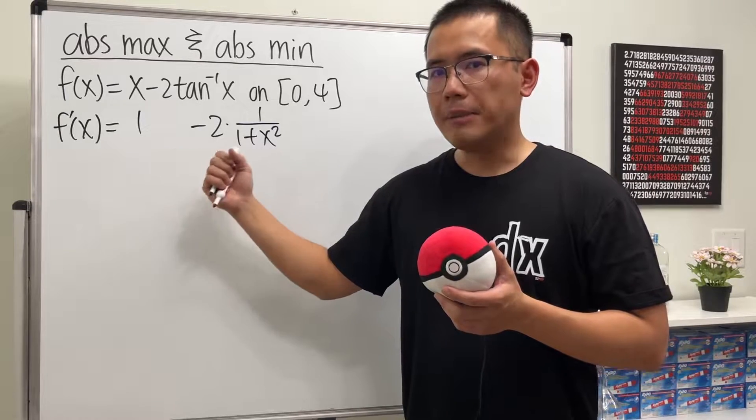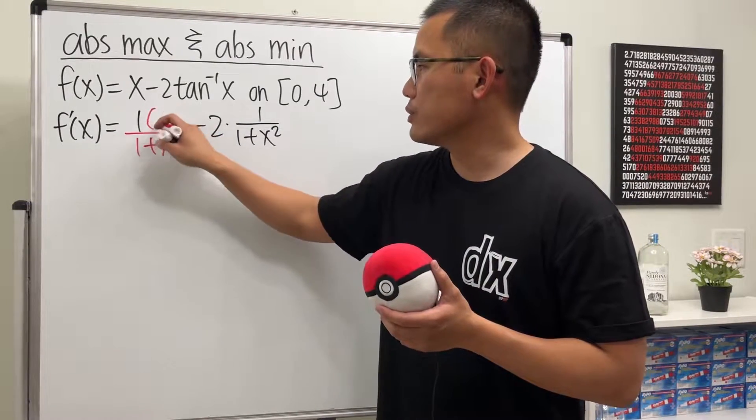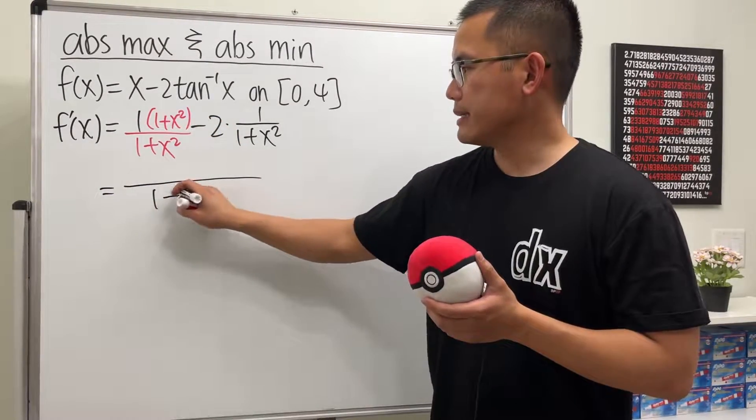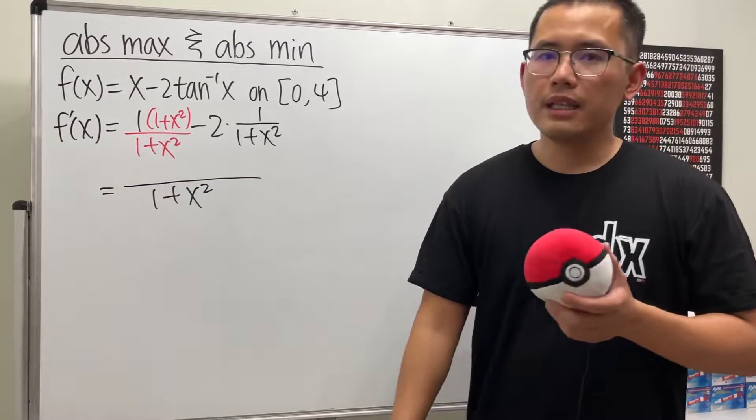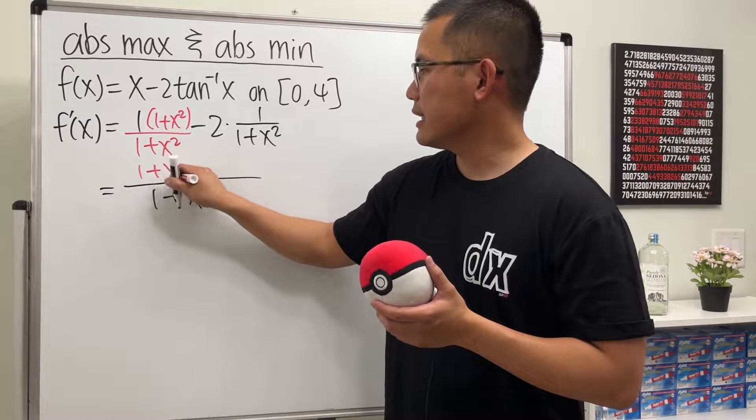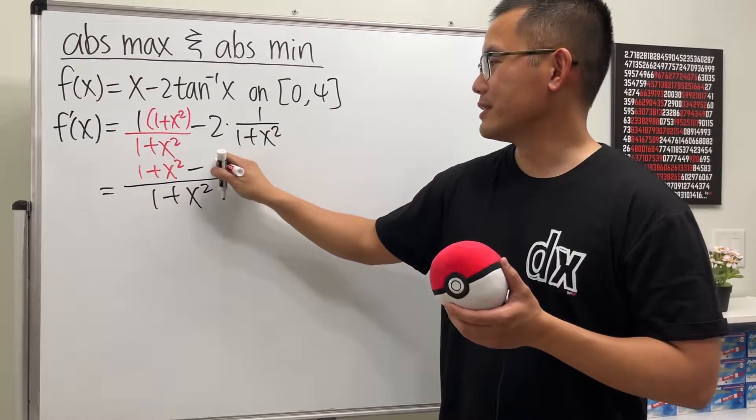Now let's get the common denominator, which is 1 plus x squared, and then let's do the same on the top as well. So we get 1 plus x squared on the bottom. And then for the top, here we have 1 plus x squared.